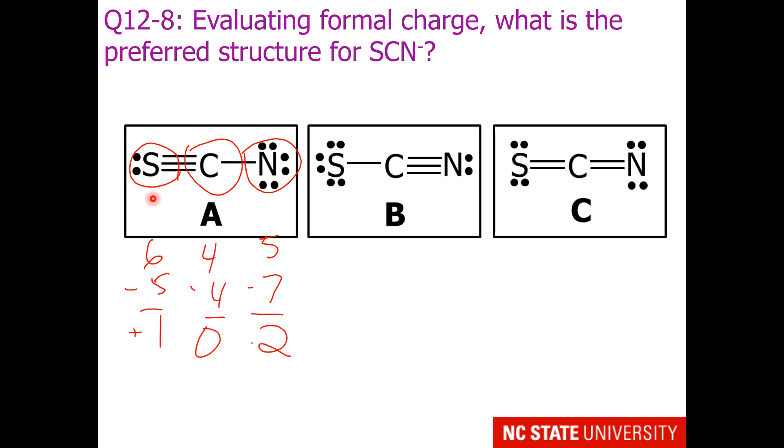So I'll get you started. For structure A, when I divide the bonds equally, sulfur is in group 6, but there are 5 electrons in the circle, so sulfur's formal charge for structure A is plus 1. Carbon has group 4 and 4 electrons within the formal charge circle, so its formal charge is 0. Nitrogen has 7 electrons within the formal charge circle, but it is group 5, so the formal charge is minus 2.